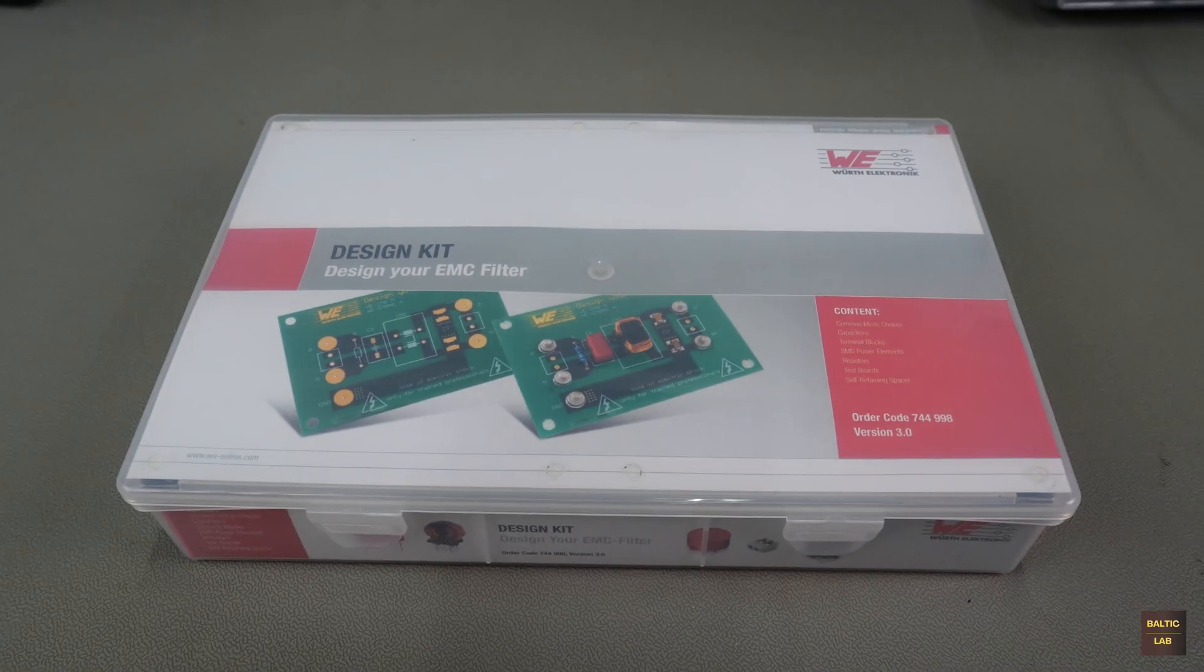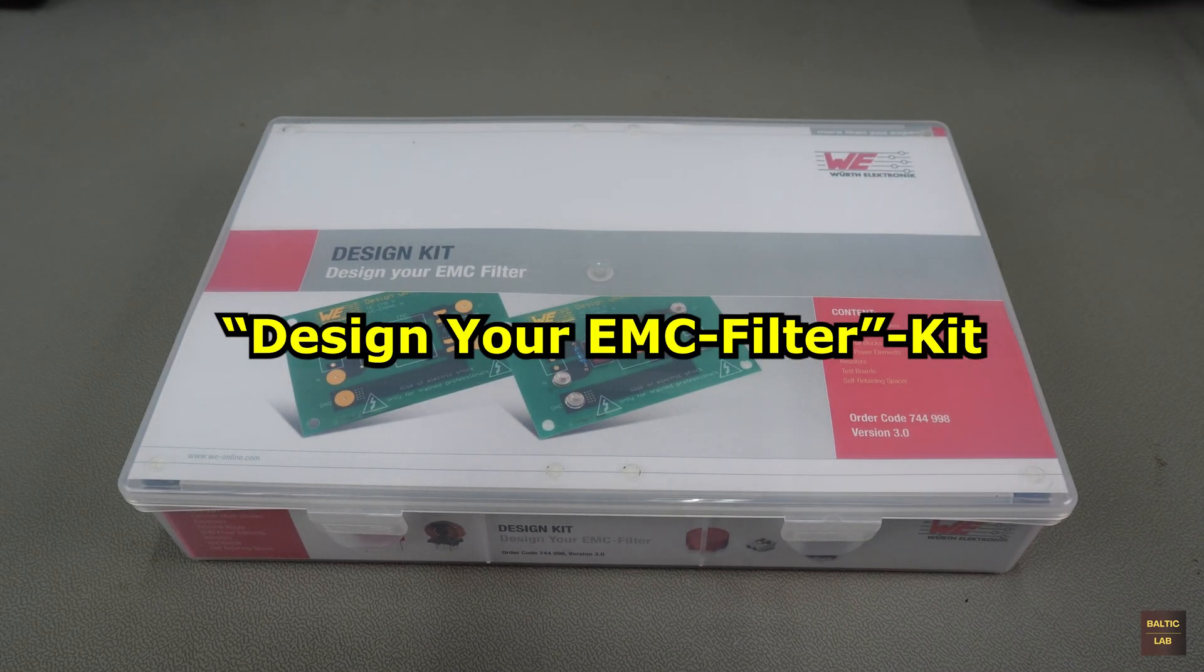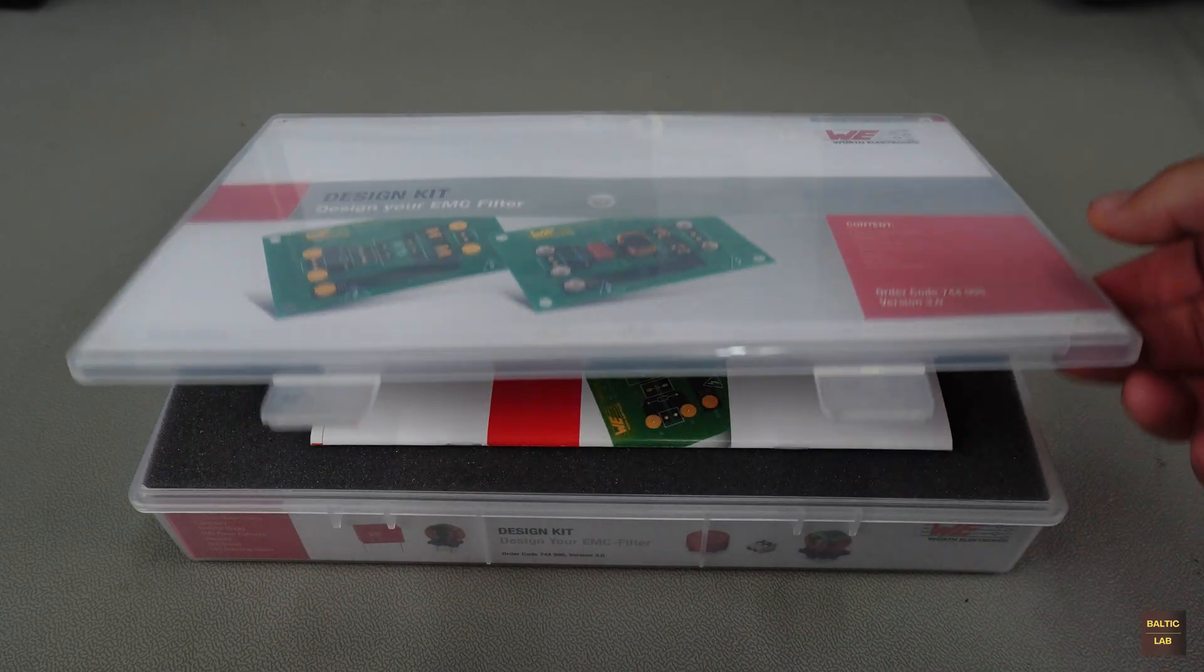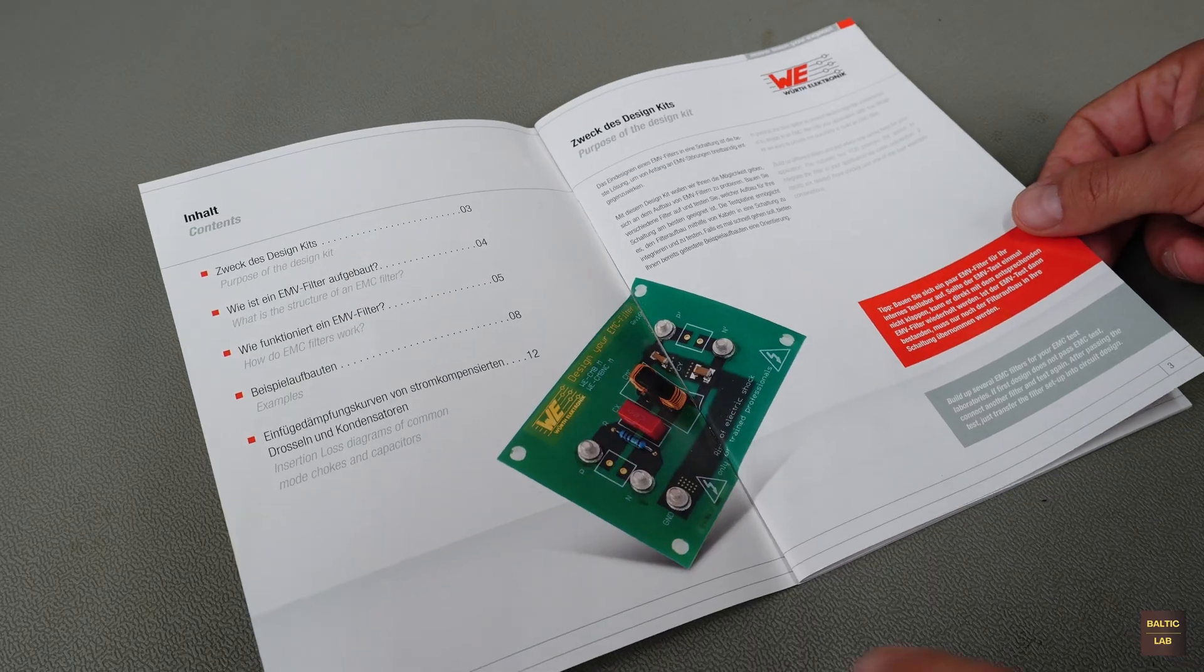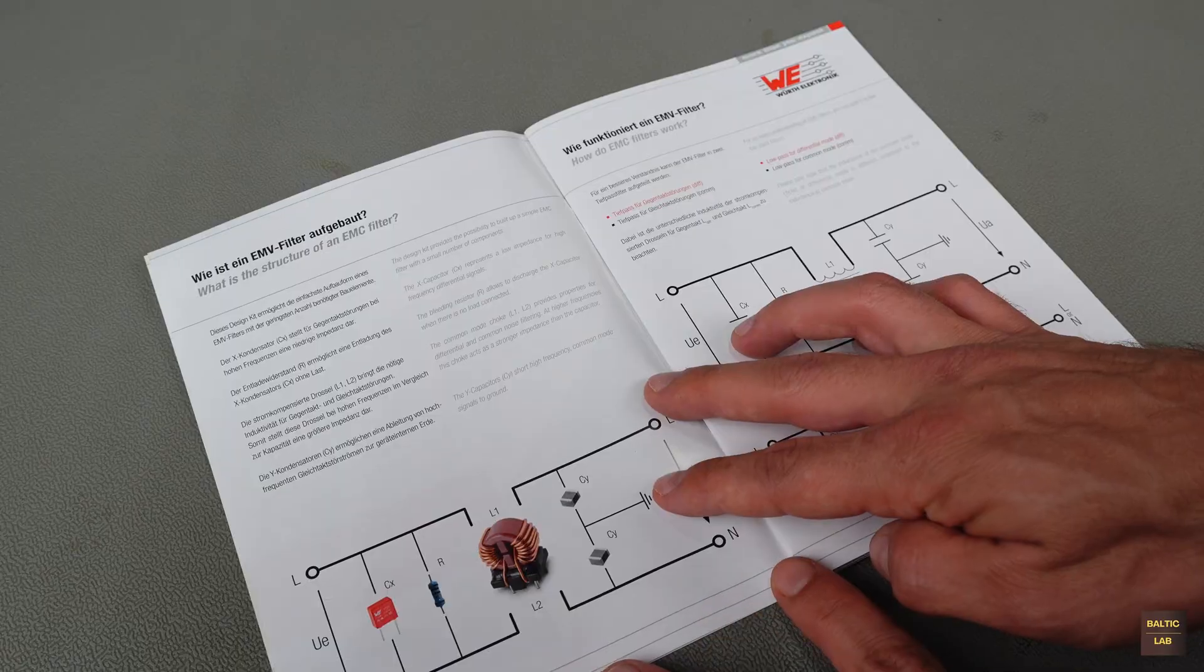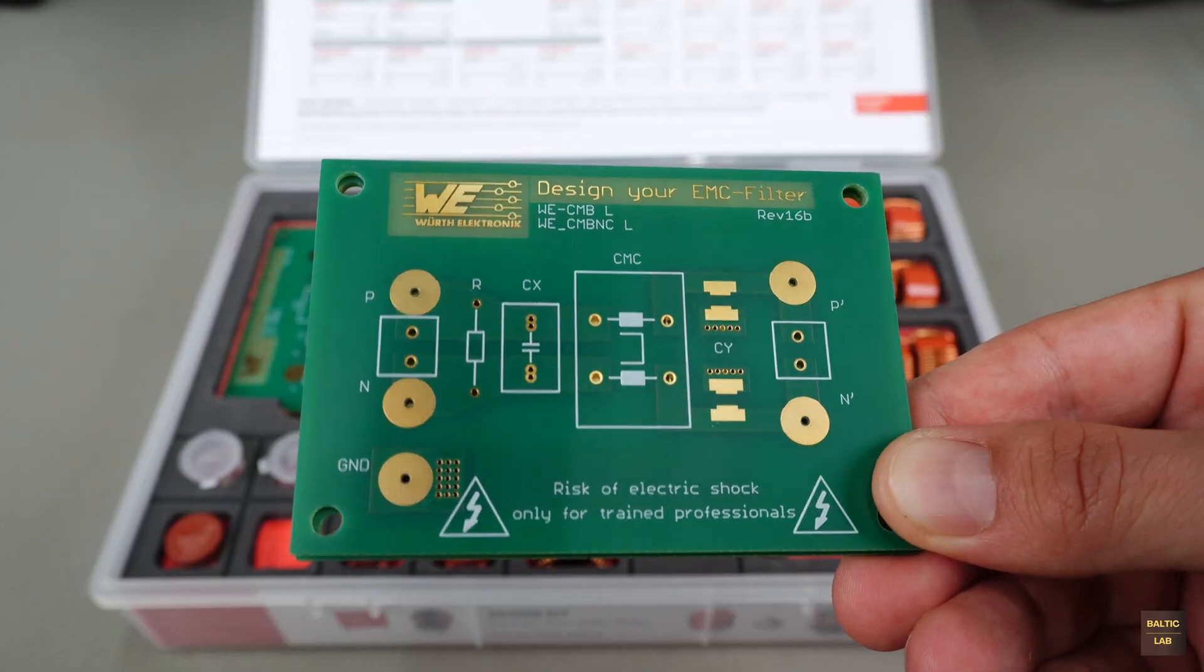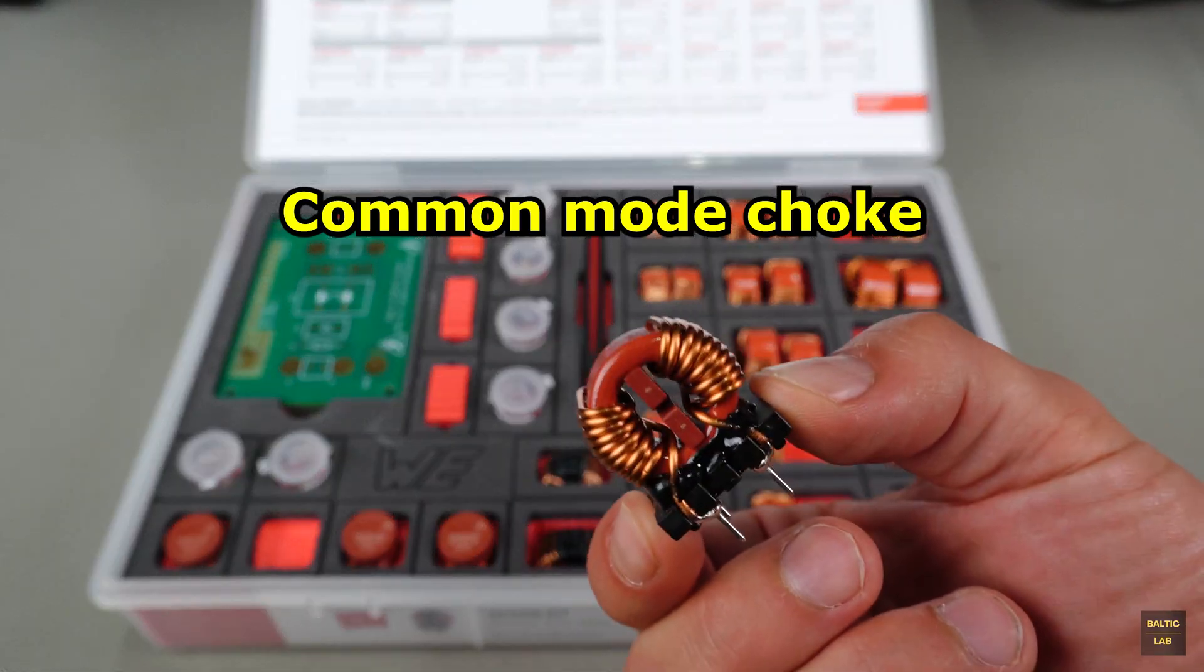Effectively suppressing common mode noise requires significantly more advanced measures. Therefore, it's time to level up with the Design Your EMC Filter Kit from Würth Electronic. This thing is basically a survival kit for conducted EMC stress. In addition to a brochure explaining proven EMC filter topologies and their function, it contains all sorts of components to quickly build and test such filters. The most important part for our buck converter problem, common mode chokes.